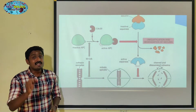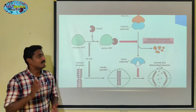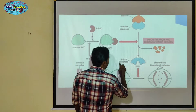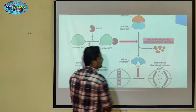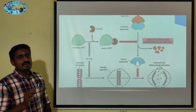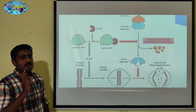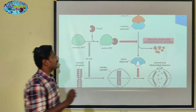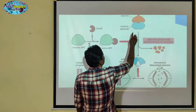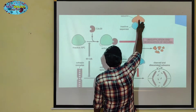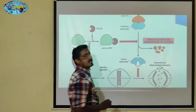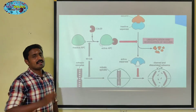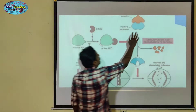In the cohesin proteins, what is it that degrades them? Separase — one enzyme — degrades cohesin. That enzyme, Separase, is already bound and inhibited by Securin.